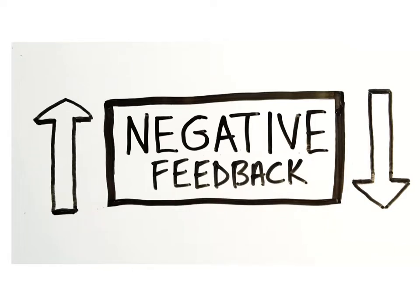There are two types of feedback systems: negative and positive. Negative feedback systems work at maintaining homeostasis by generating output that negates or opposes the stimulus, which returns the controlled condition back to its normal range. If the stimulus increases the controlled condition, negative feedback systems reverse the stimulus and bring the controlled condition back down to normal.